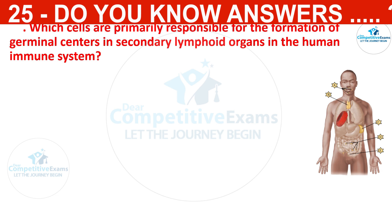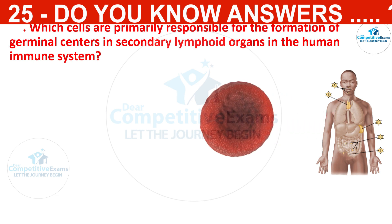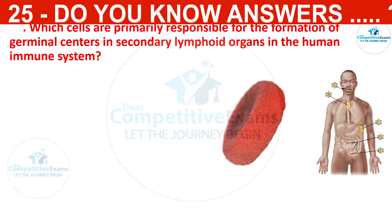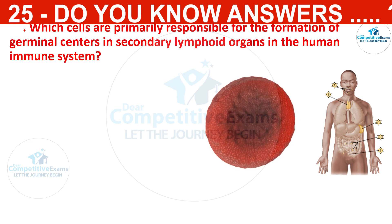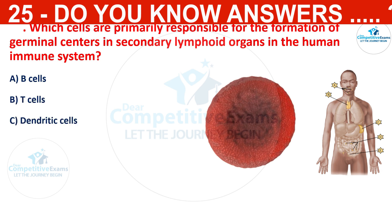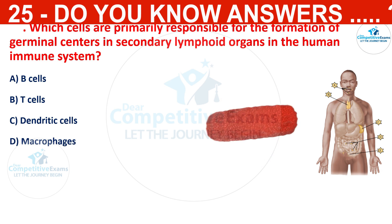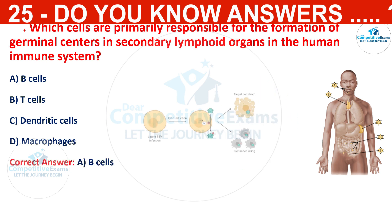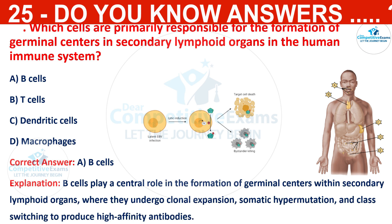Which cells are primarily responsible for the formation of germinal centers in secondary lymphoid organs in the human immune system? The options are B cells, T cells, dendritic cells, or macrophages. The correct answer is B cells. B cells play a central role in the formation of germinal centers within secondary lymphoid organs, where they undergo clonal expansion, somatic hypermutation, and class switching to produce high-affinity antibodies.